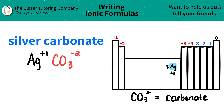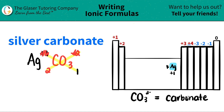Now we're going to do this little trick where we take the charges and we crisscross them down to see how many of each component I need. This one crisscrosses down to the carbonate, telling me that I only need one carbonate. And then this two crisscrosses down, telling me that I need two Ag's.